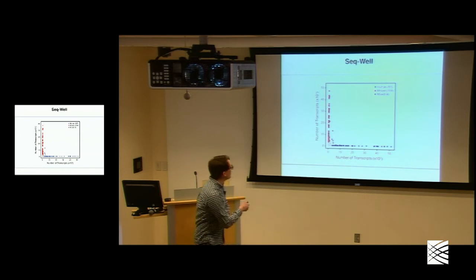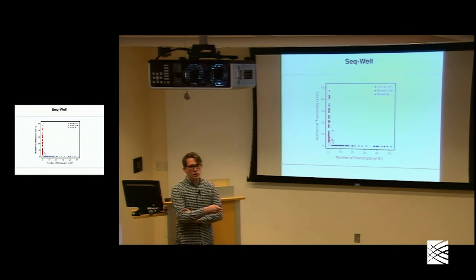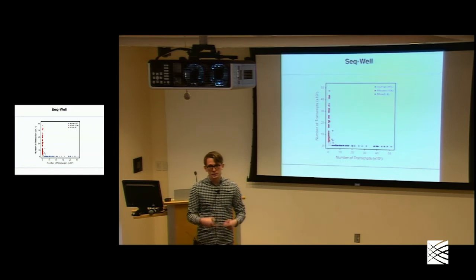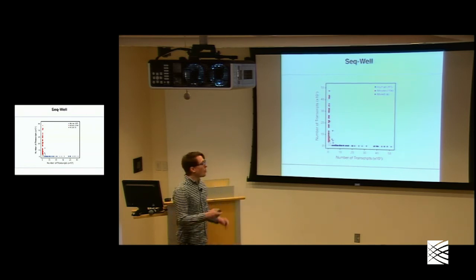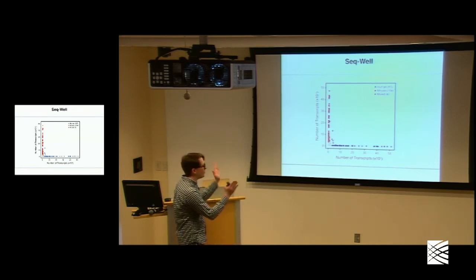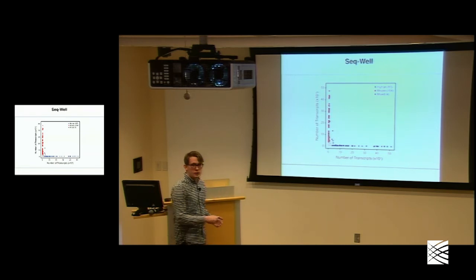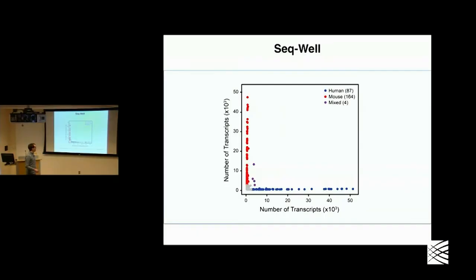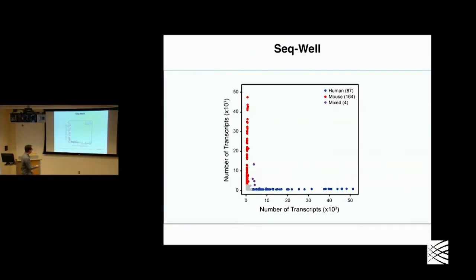Here the mixing would indicate that these are actual doublets in the wells. For more mixing, what we would actually see is a bowing in along the axes — if there's just nonspecific cross-contamination, we would see a bowing in. But here we see very straight lines along the axes, so we think these are more likely to be actual doublets.